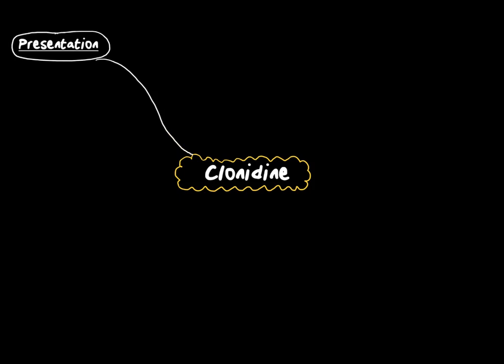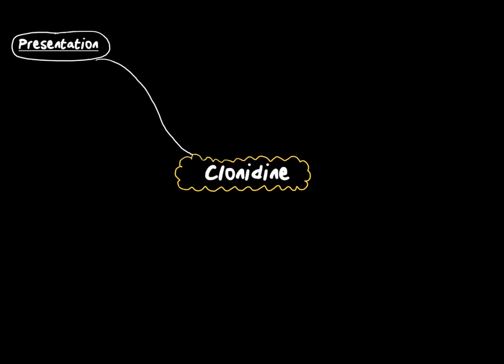Starting with presentation, clonidine is available in tablets, transdermal patches, and as a clear colourless solution for injection, typically found in 150 micrograms per ml ampoules, which are then diluted up to satisfy whatever needs the infusion you're having within your intensive care unit.